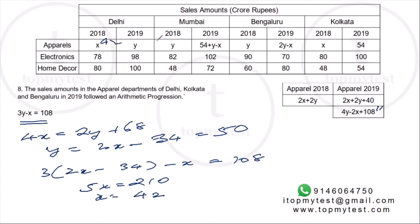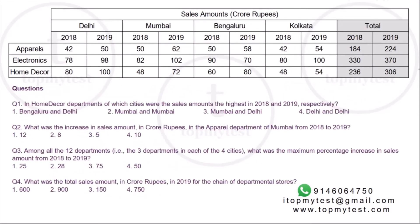With X equals 42 and Y equals 50, all missing apparel values are now filled in: Delhi 2018 is 42, Mumbai 2018 is 50, Bangalore 2018 is 50, Kolkata 2018 is 42, Delhi 2019 is 50, Mumbai 2019 is 104 minus 42 equals 62, Bangalore 2019 is 2 times 50 minus 42 equals 58, and Kolkata 2019 is 54. All values are now found and totals calculated.